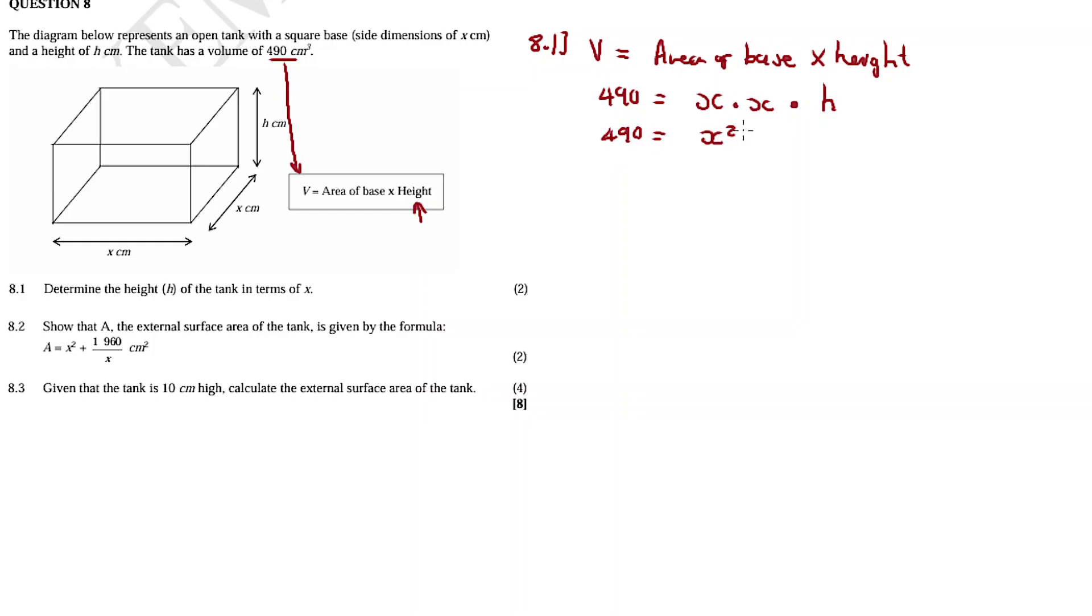So 490 equal to x times x, that's x squared, then times h. Then we divide both sides by x squared, cancel cancel, then we have h as 490 over x squared. This is h in terms of x, in terms of x. That's like I said, technically you are actually doing an optimization problem, you are doing it without having to optimize.